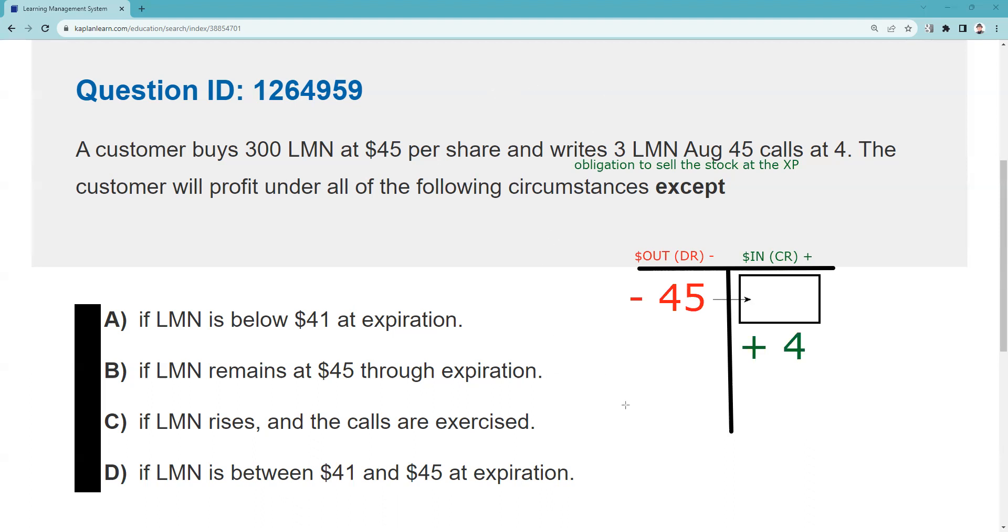Now, the thing I like about the T is if you get the T fired up, you can simply plug in the numbers being offered to you and see if it makes sense. The question—by the way, please note I haven't read the question yet—you get in the habit of doing what I call the initial setup before you even look at the question. So I did my setup. It says the customer will profit under all the following circumstances except. So one way to proceed is you could have done the break-even at $41.